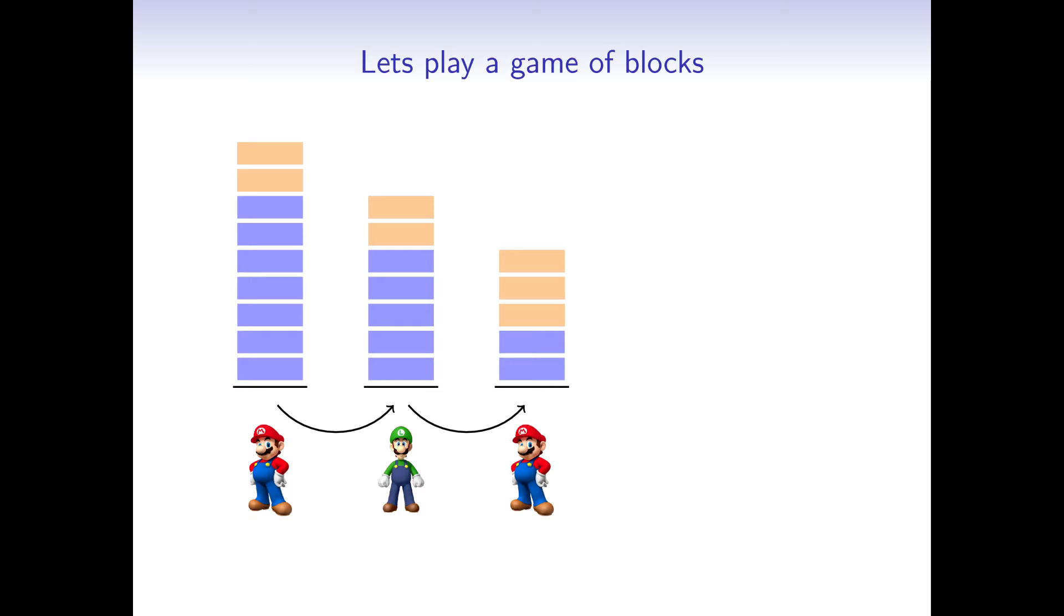Mario removes 3 blocks, leaving 2. And Luigi takes the last 2 blocks. Now it would be Mario's turn, but now the pile is empty and he cannot perform any moves and loses the game.